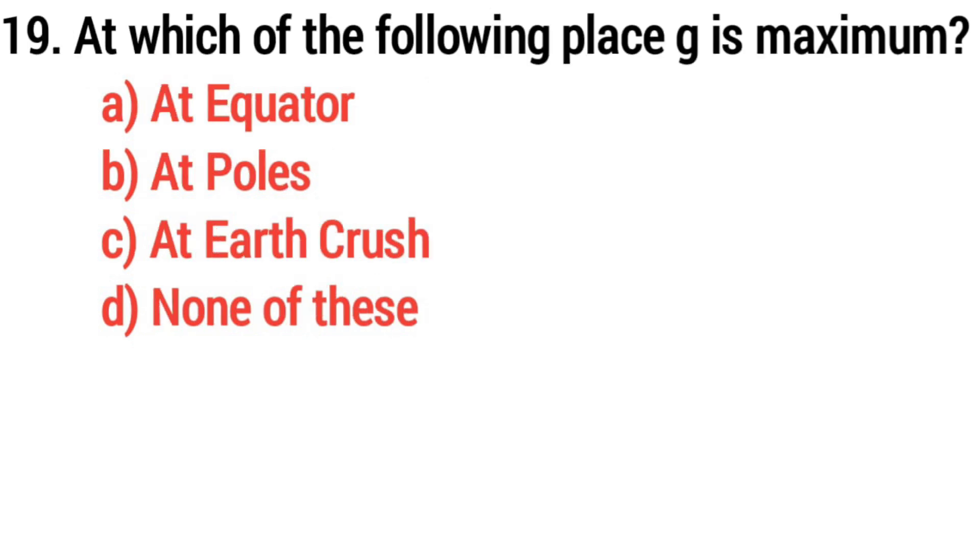Question number 19. At which of the following place is G maximum? Answer: Option B, At poles.